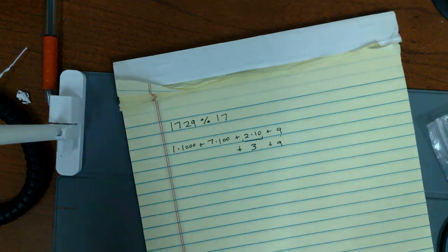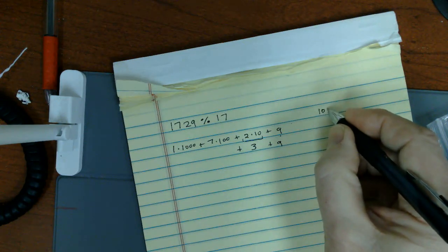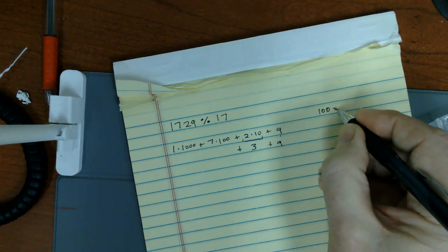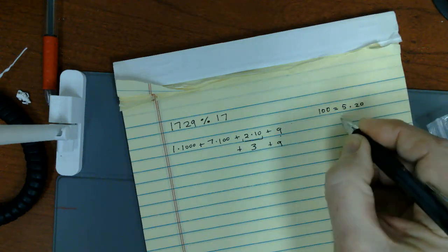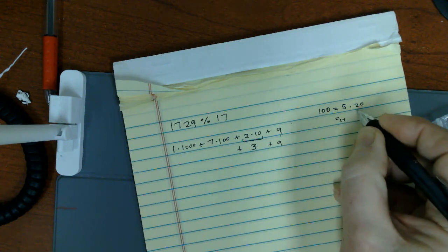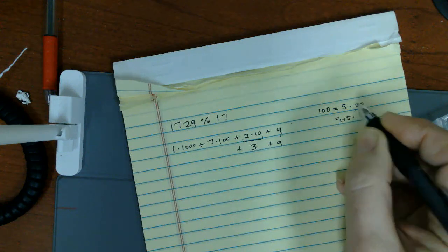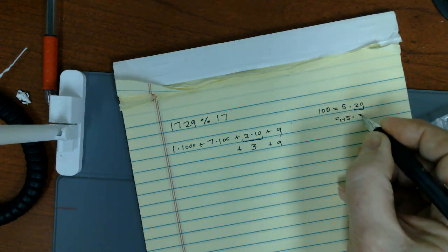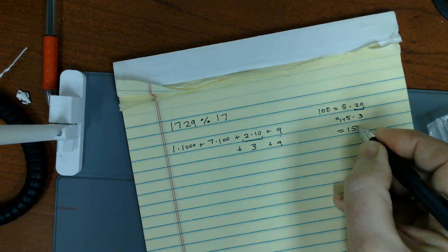Now, let's be smart. So 100 is equal to 5 times 20. When I take that mod 17, the 5 is still 5, but the 20 we've just calculated is 3. So this is 15.